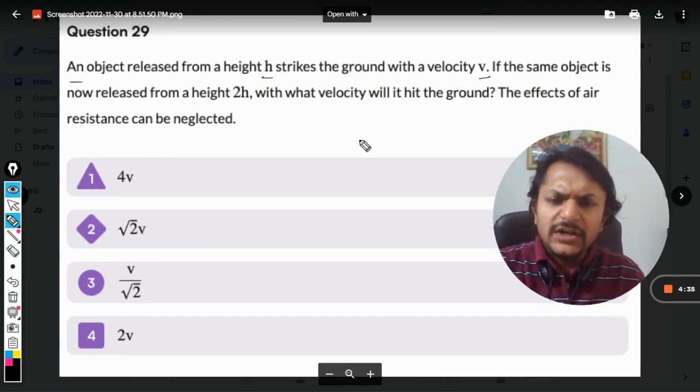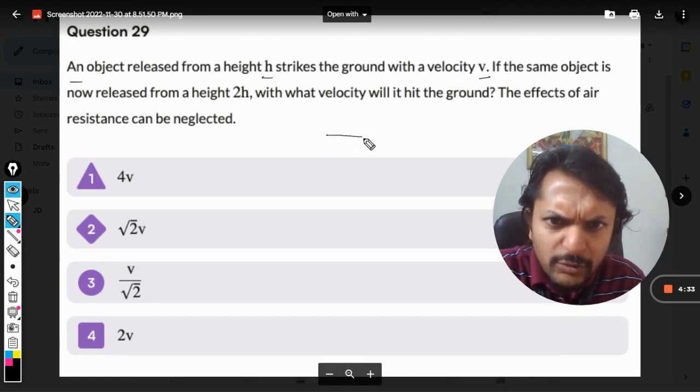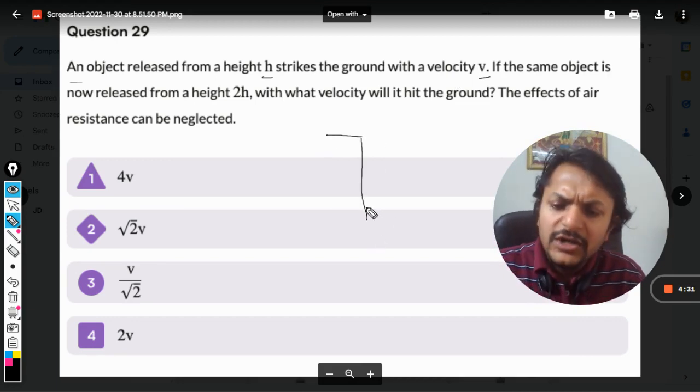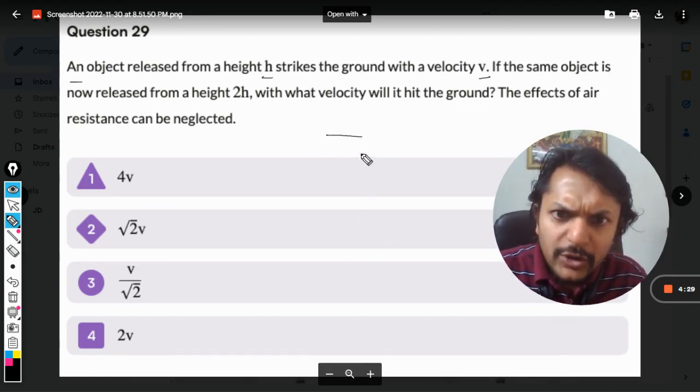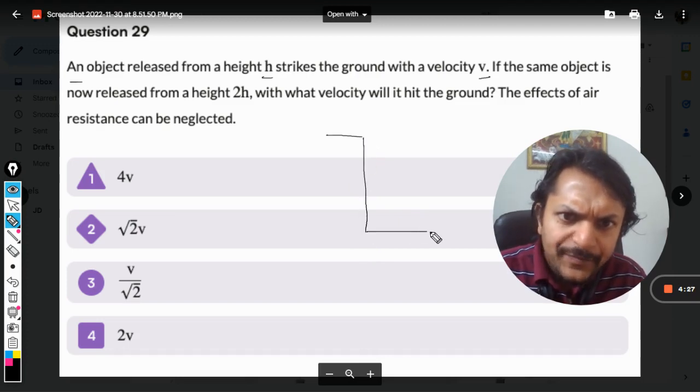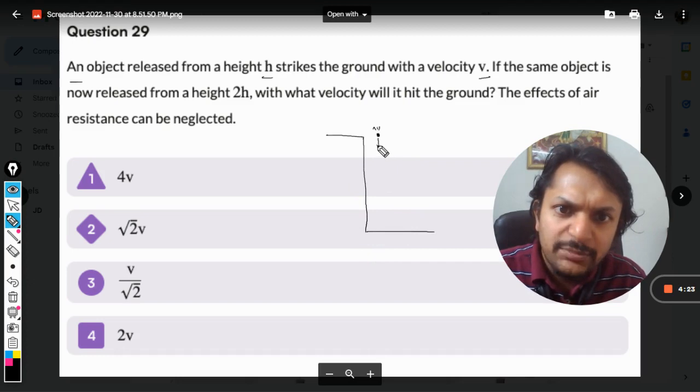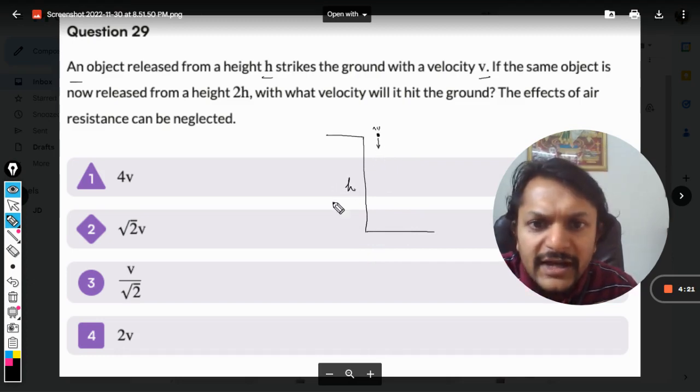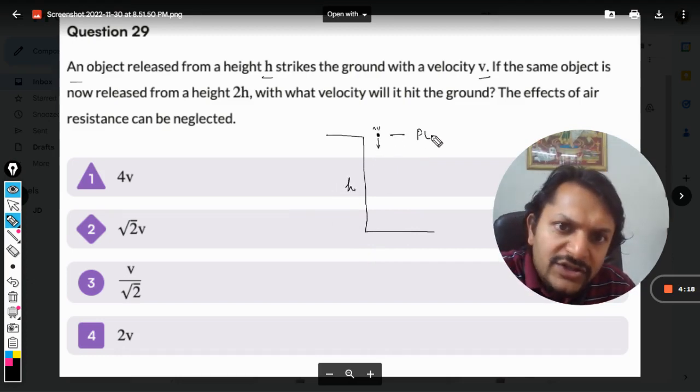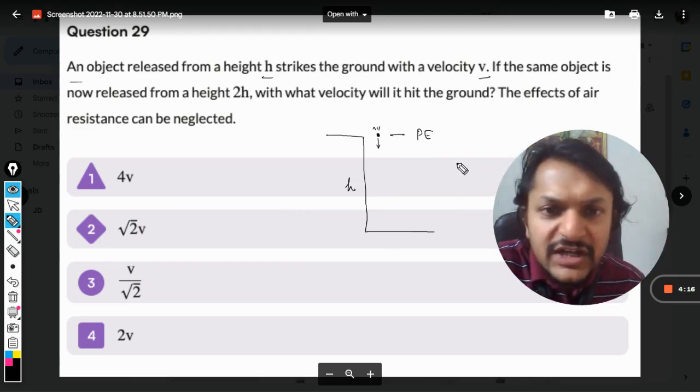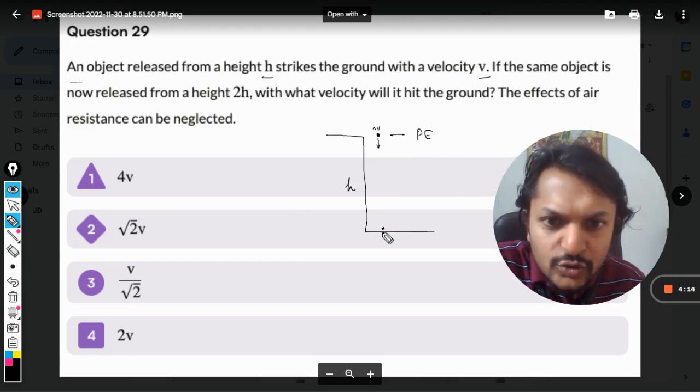Air resistance is neglected, so it's a very simple formulation from the topic of work energy—the conservation of energy principle. You see, this is the ball falling from height h. All of the potential energy here gets converted into kinetic energy.